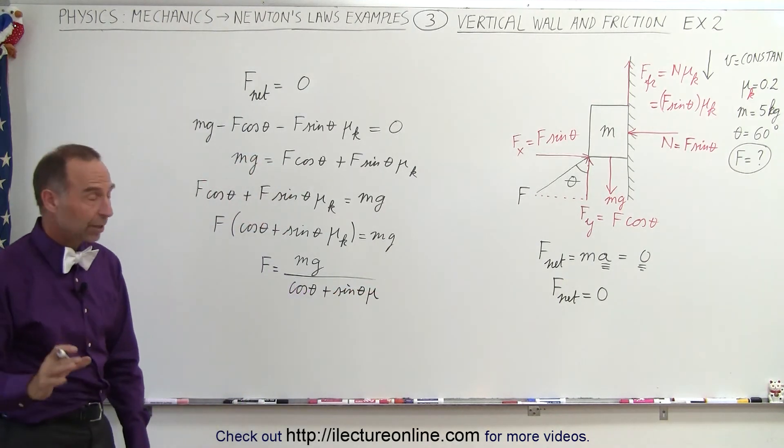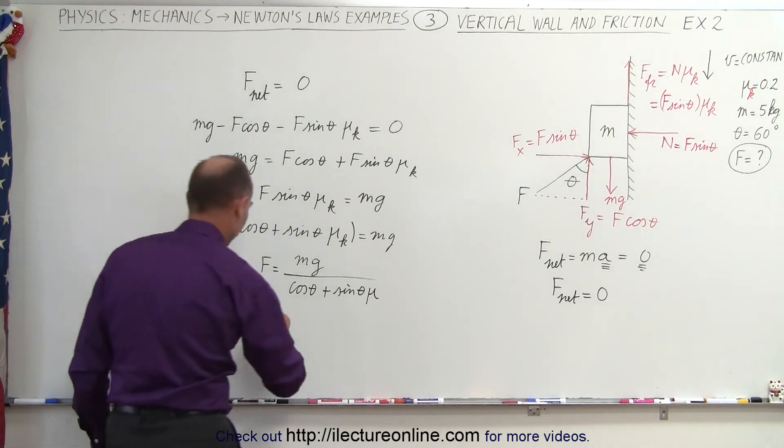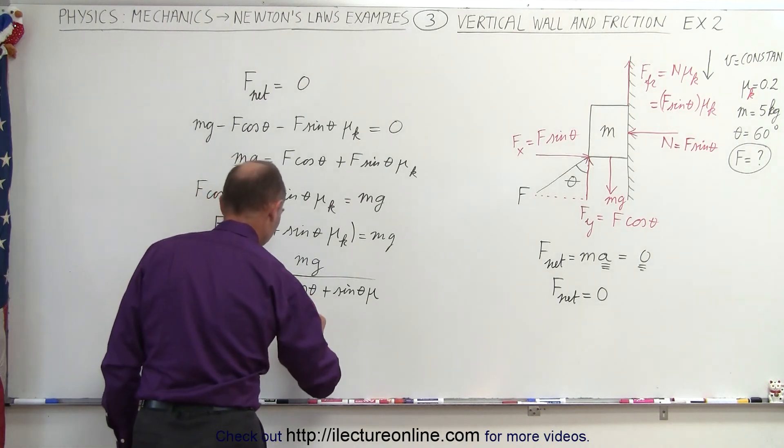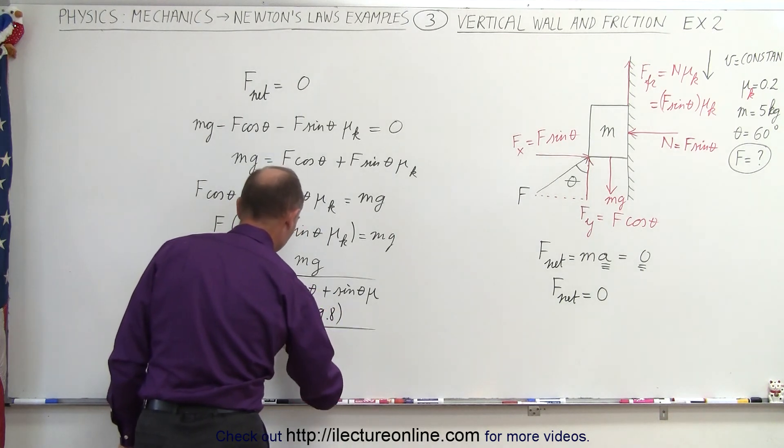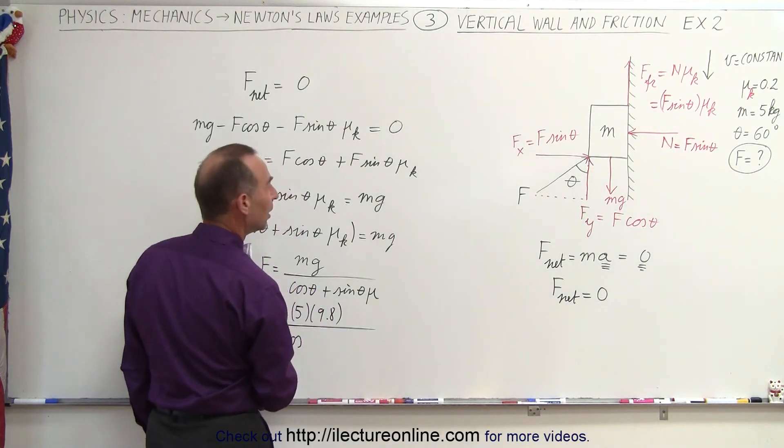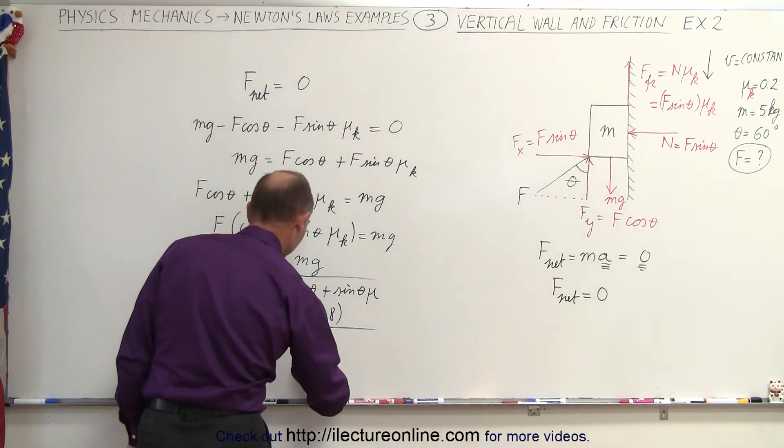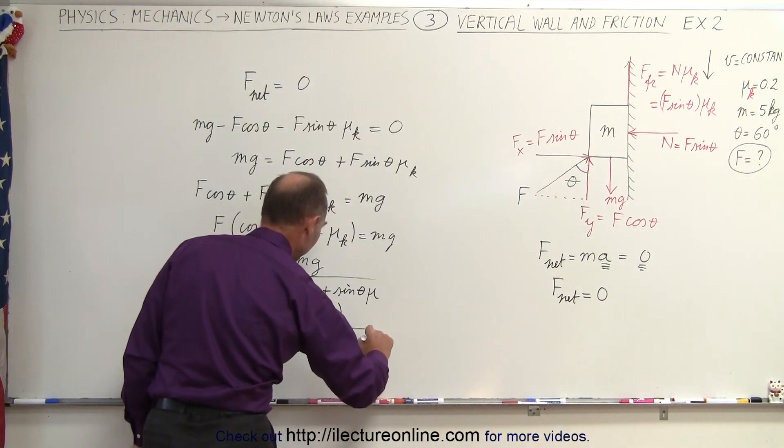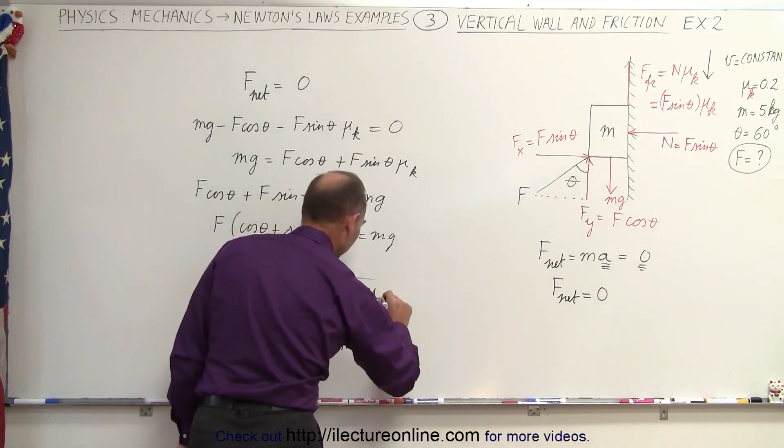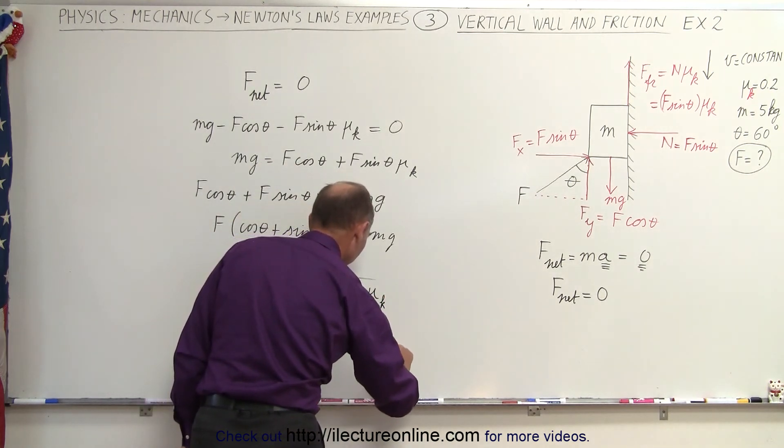And now to find the numerical value, we simply plug in the values there. f equals 5 kilograms times 9.8 meters per second squared divided by the cosine of theta. That would be the cosine of 60 degrees plus the sine of 60 degrees times mu. That would be mu sub k. That would be 0.2.